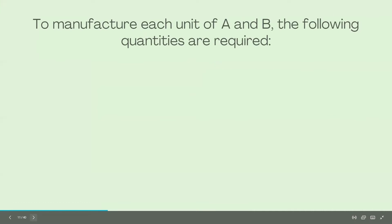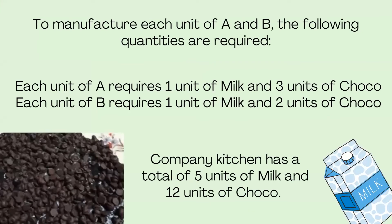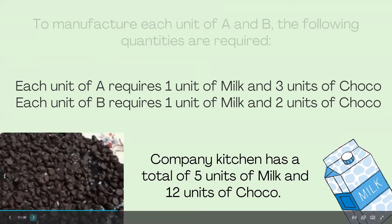Let's analyze the criteria. Each unit of chocolate A requires one unit of milk and three units of choco. In the company kitchen, they have a total of five units of milk and 12 units of choco as stock.